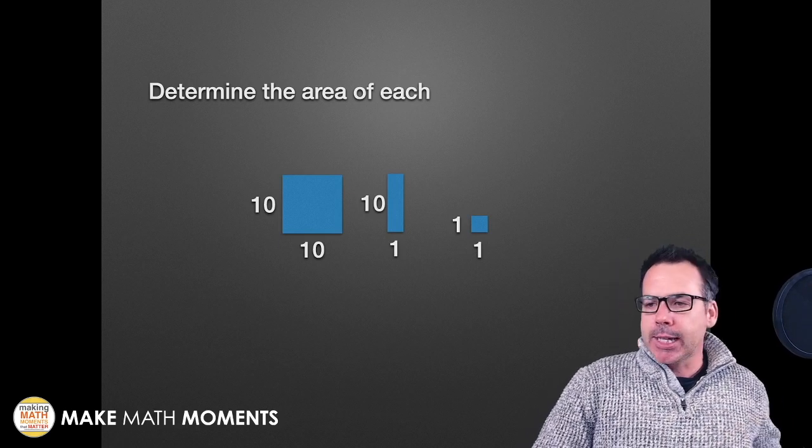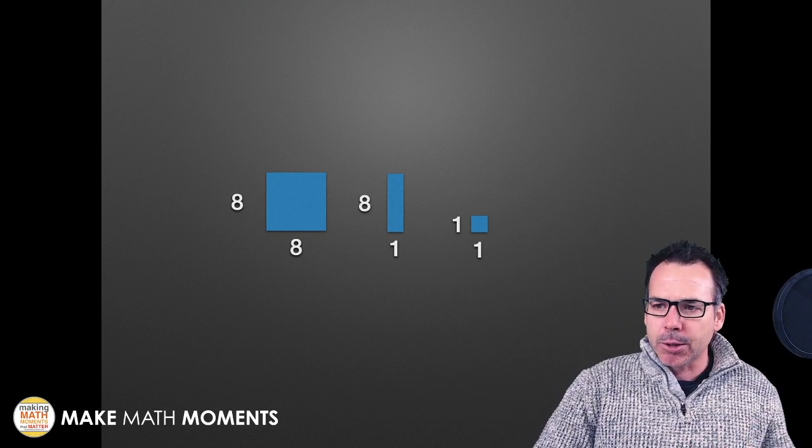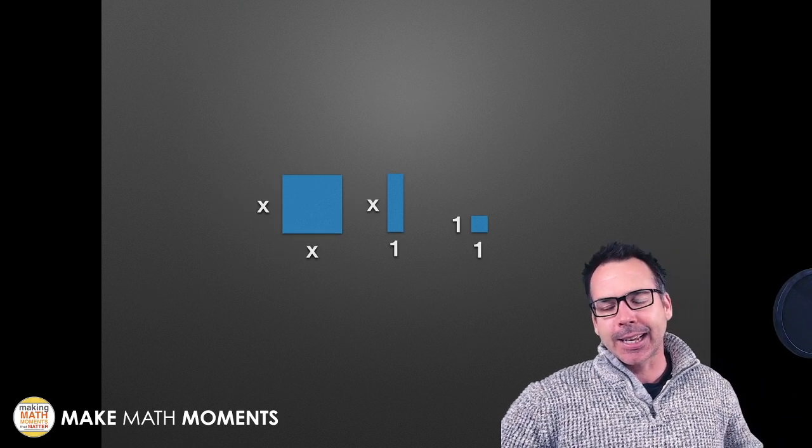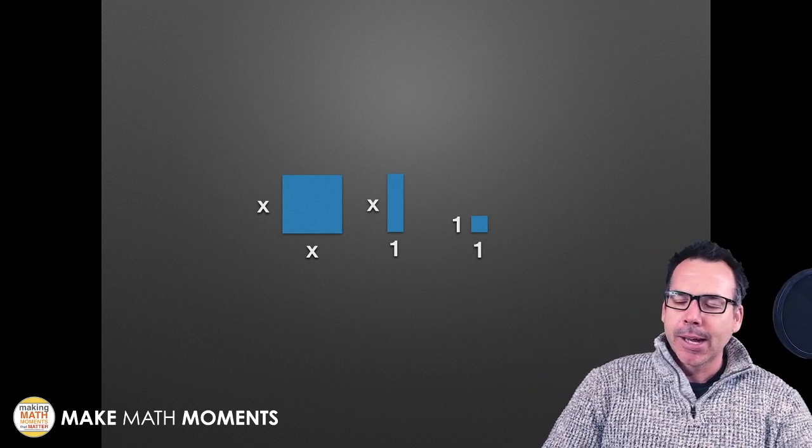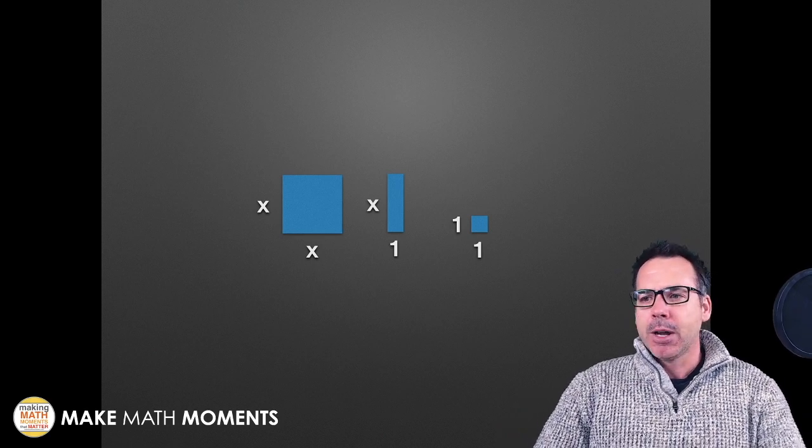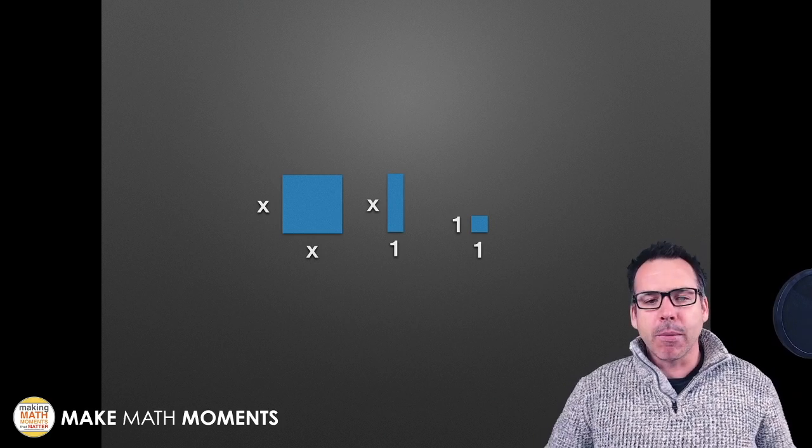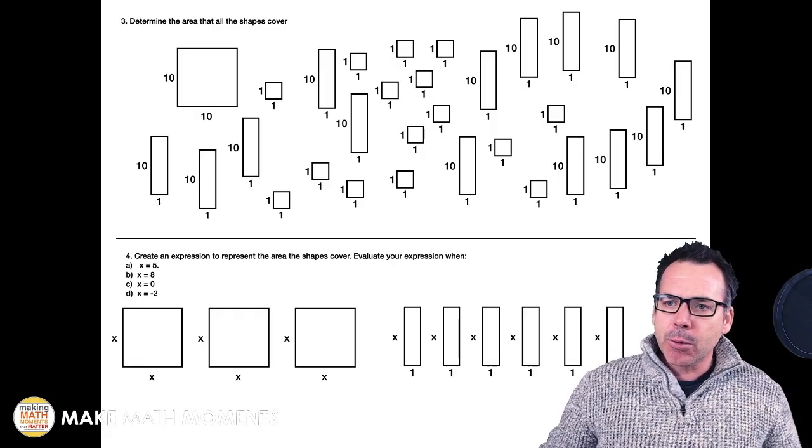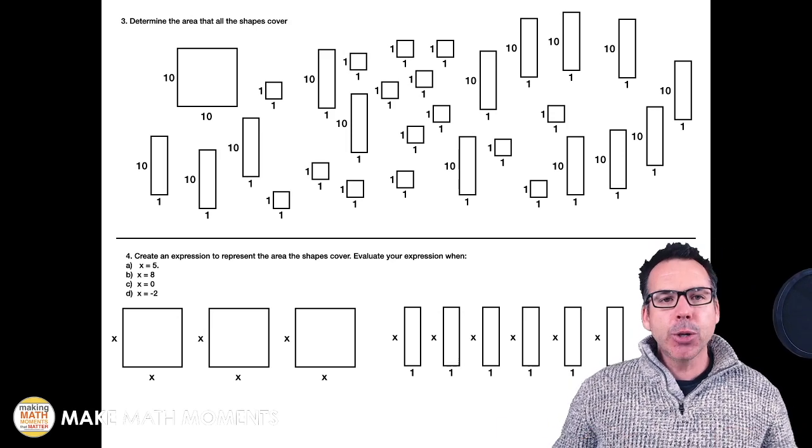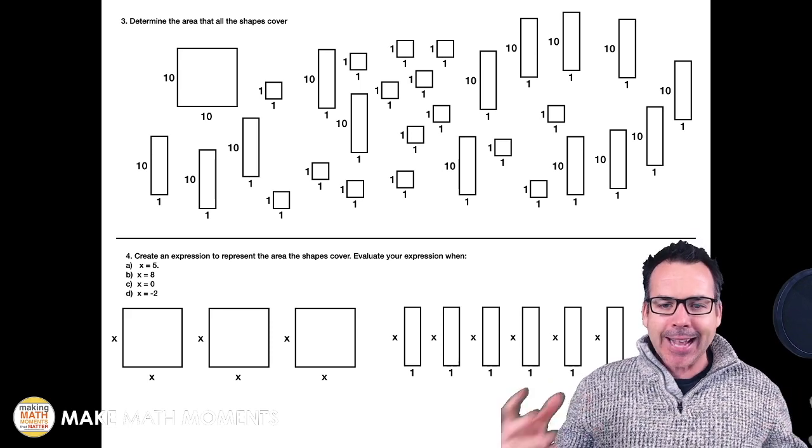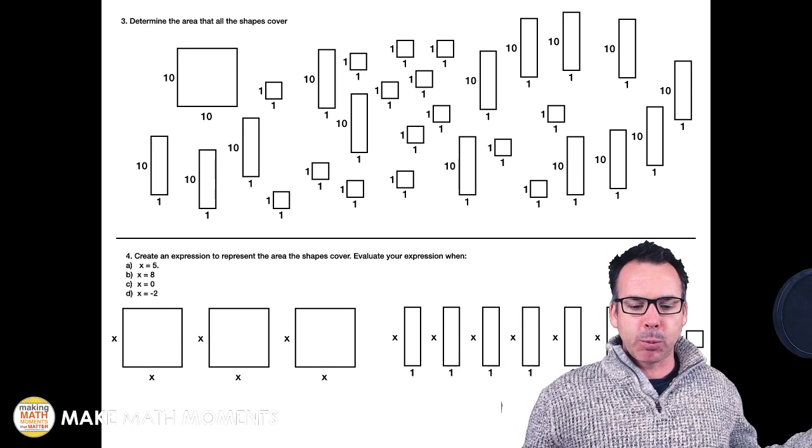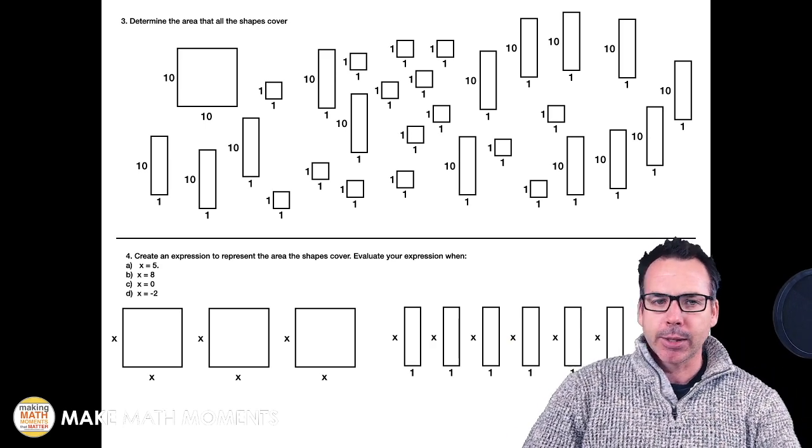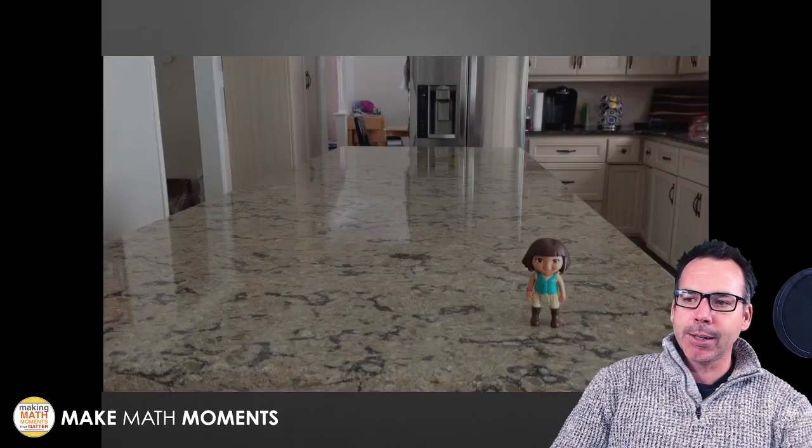If they can see that these two problems have the exact same shapes in the same order, but we've changed the side lengths, they're going to say it's the same number of squares, rectangles, and little squares. We could keep working with that idea to help formulate an expression, but we're not ready to throw X's in here yet. We're working our way there. Kids are starting to see that there's power in grouping and simplifying expressions. That's really the big goal we want to accomplish.